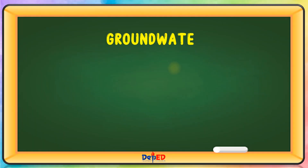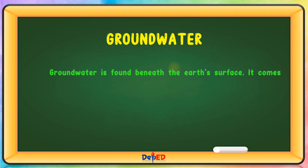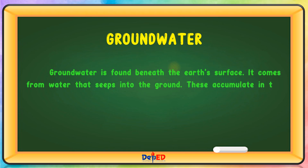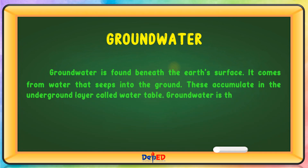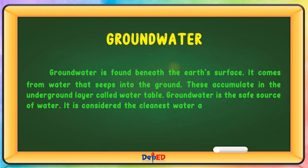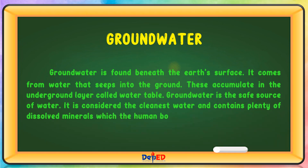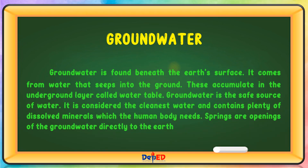Ground water is found beneath the Earth's surface. It comes from water that seeps into the ground. This accumulates in the ground in an underground layer called the water table. Ground water is the safest source of water. It is considered the cleanest water and contains plenty of dissolved minerals which the human body needs. Springs are openings of the ground water directly to the Earth's surface.